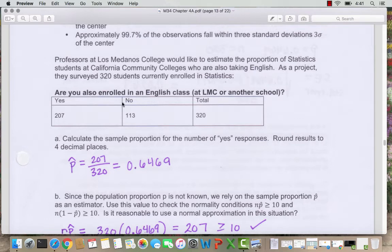Of those, 207 were in an English class and 113 were not in an English class, and those add up to 320 total.